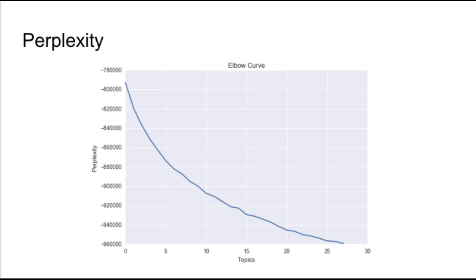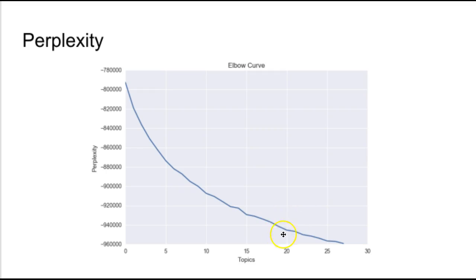We can see that perplexity drops off quite significantly up to around 25 topics, and then around 75 to 100 topics it stabilizes. Moving forward, I chose to select 100 topics and then tuned alpha and eta.